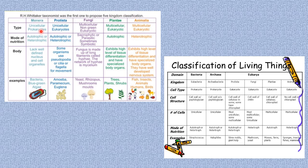Under Monera: they are unicellular prokaryotes. Their mode of nutrition is either autotrophic or heterotrophic. They lack a well-defined nucleus and cell organelles. Examples are bacteria and blue-green algae. For Protista: they are unicellular and eukaryotic. Their mode of nutrition is also autotrophic or heterotrophic. Some use pseudopodia, cilia, or flagella for movement. Examples are amoeba, paramecium, and euglena.